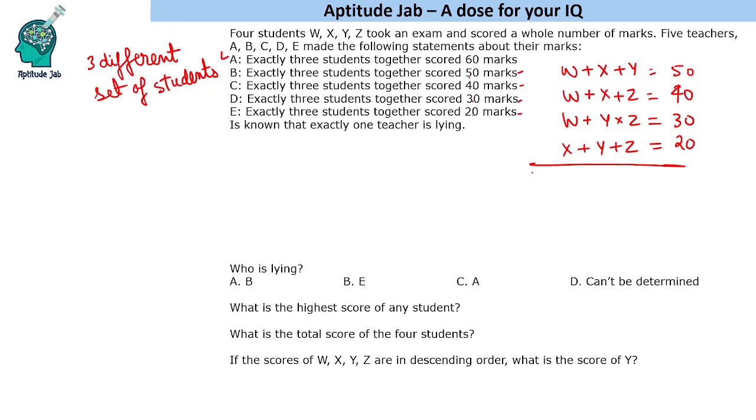Three times W plus three times X plus three times Y plus Z. If we add this it comes to 140, so 3(W+X+Y+Z) = 140.